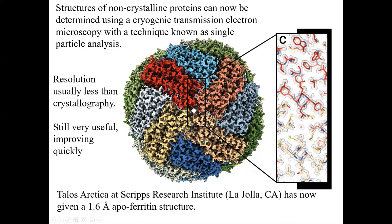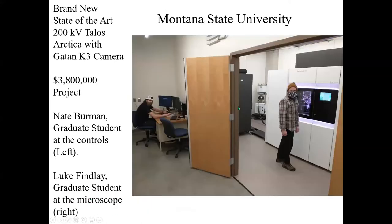There are other ways to determine structures of proteins at atomic resolution without crystallizing them. Transmission electron microscopy under cryogenic conditions now uses a technique known as single particle analysis. The resolution there is usually less than crystallography, but it's moving along quickly. Here's an example from a microscope at the Scripps Research Institute called the Talos Arctica, a 200 kV transmission electron microscope, which achieved a 1.6 angstrom structure of apoferritin. I mention this because we now have one here at Montana State University as well.